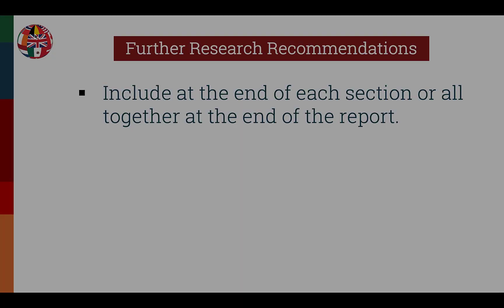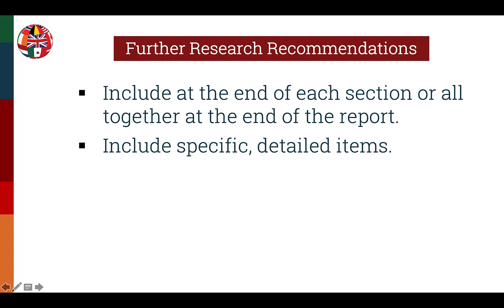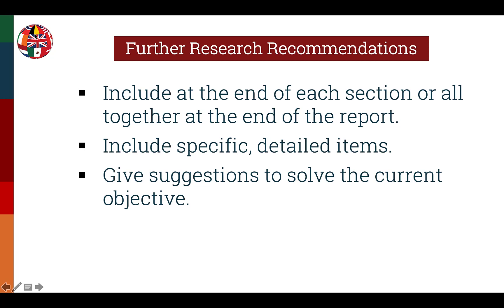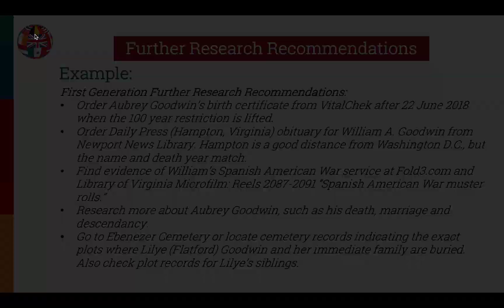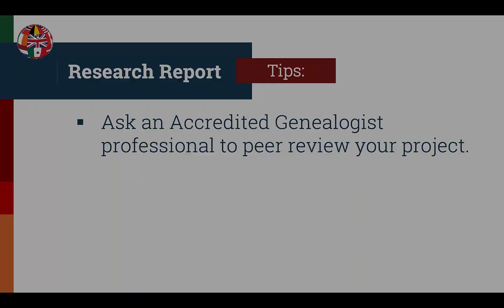The last element in the body of the report is further research recommendations, which can be included at the end of each section or all together at the end of the report. Include specific detailed items such as film numbers, databases, and archives or repositories that could be contacted for further information. Be sure to give suggestions to solve the current objective, but you can also include suggestions to solve new research objectives. Here's an example of further research recommendations — pause the video to read these suggestions in more detail.